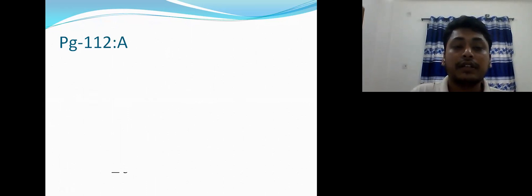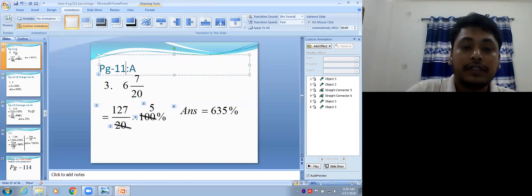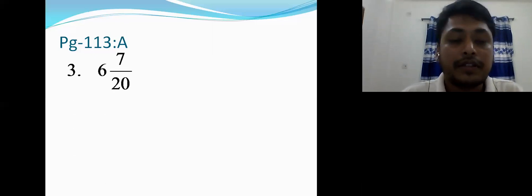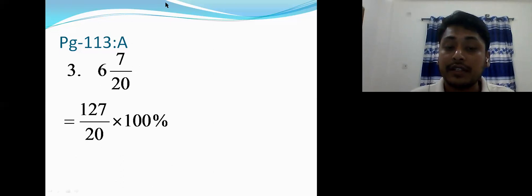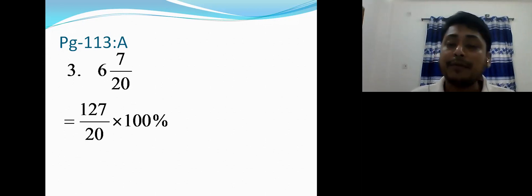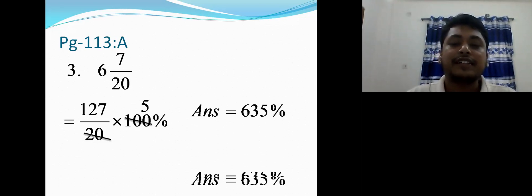This is the same page. Number 6: 6 7/20 — first change to improper fraction: 6 × 20 = 120, plus 7 = 127, so 127/20. Multiply by 100 percent. Cancel 20 and 100: 20 × 5 = 100. Multiply 127 × 5 = 635 percent.